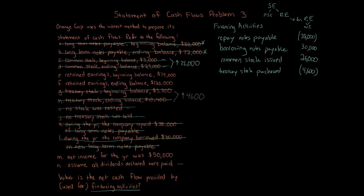We're trying to isolate the W — the withdrawals, which are the dividends. We know net income is $50,000, which goes under operating activities, not financing activities. But we still need it to calculate the amount of dividends. Because all dividends declared were paid, we can isolate that number.